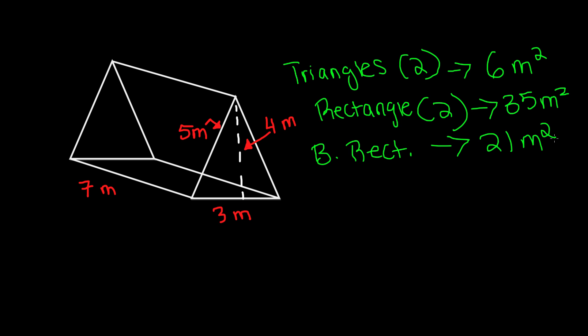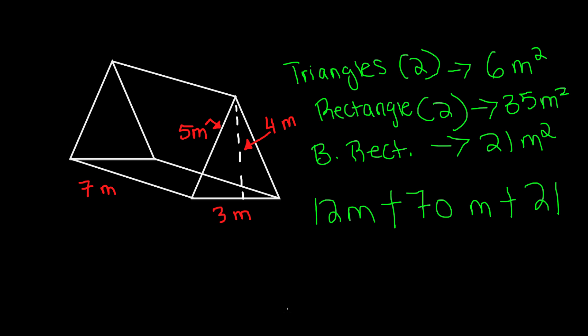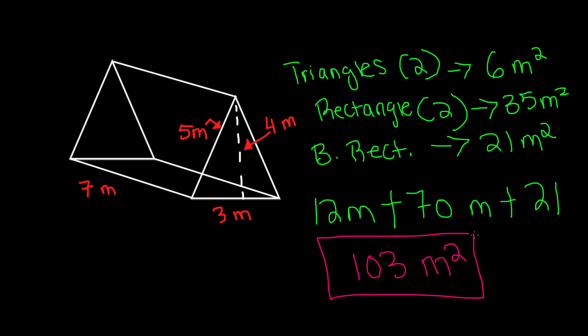So 21 meters squared. Now that we know the area of each of these 2D objects in this 3-dimensional figure, we can go ahead and add them. But before we do that, we have to multiply 6 by 2 and 35 by 2, since there are two triangles of the same area and two rectangles of the same area as well. So 6 by 2 is 12, plus 35 times 2 gives us 70, plus 21. Using the calculator: 12 plus 70 plus 21 gives us 103. So our total area will be 103 meters squared, and this is the surface area of this triangular prism.